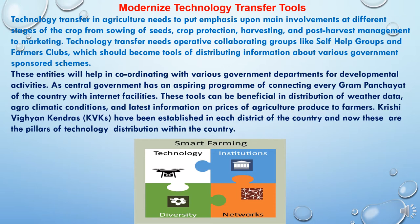Technology transfer needs operative collaborating groups like self-help groups and farmers clubs, which should become tools for distributing information about various government-sponsored schemes. These entities will help in coordinating with various government departments for developmental activities. The central government has an aspiring program of connecting every gram panchayat of the country with internet facilities.